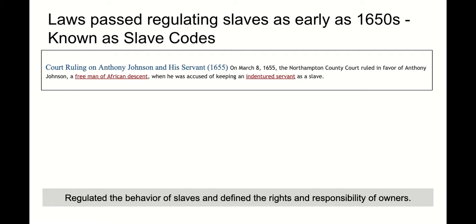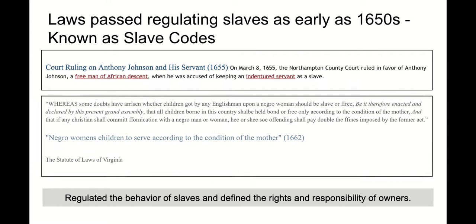Early on, slaves could actually have indentured servants and had some rights. But then within 10 years, these laws get more restrictive. As some doubts have arisen whether children got by an Englishman upon a Negro woman should be slave or free, be it therefore enacted and declared by this present grand assembly that all children born in this country shall be held bond or free according to the condition of their mother. It was hard to disprove who was your mother, but it was very easy to disprove who was your father. So it was the condition of your mother that determined whether or not you were slave or free.